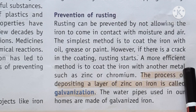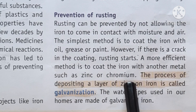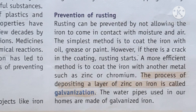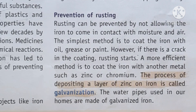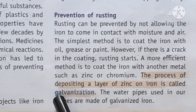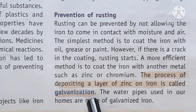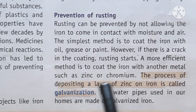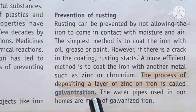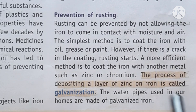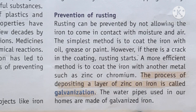The most effective way to prevent rusting is to coat the iron with another metal such as zinc or chromium. The process of depositing a layer of zinc on iron is called galvanization. Generally, water pipes are made of galvanized iron - galvanized iron means iron with zinc coating.